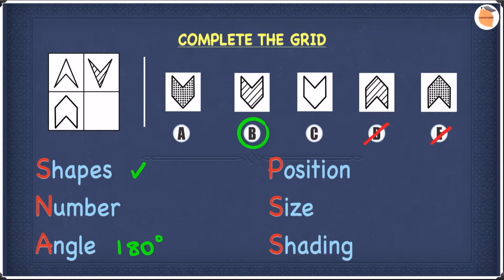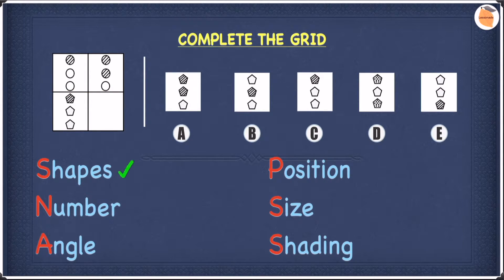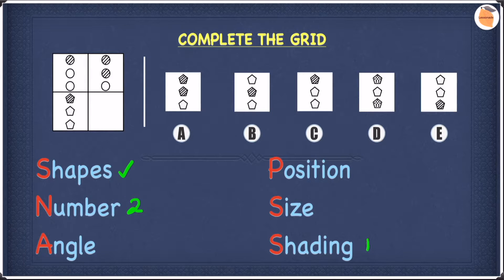Now let's go on to the next example. Let's start by comparing the top two shapes — looking at similarities and differences. In terms of similarities, they're both the same shape. In terms of differences, on the left-hand side there's only one hatched pattern, while on the right-hand side we have two hatched shapes.